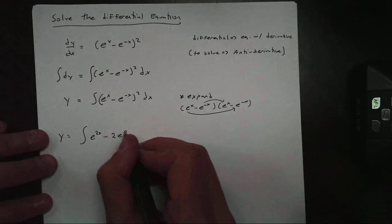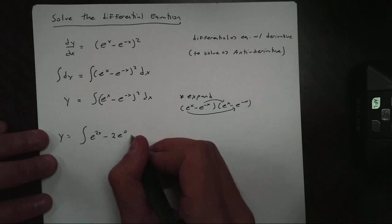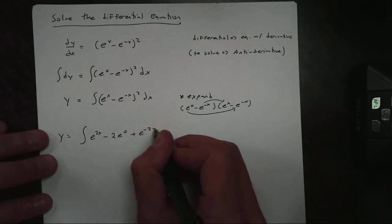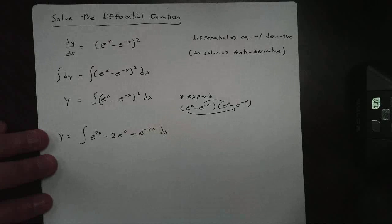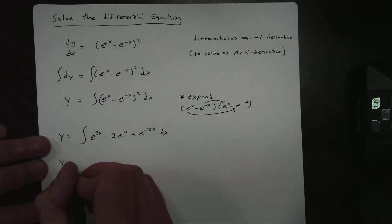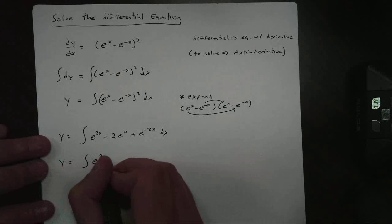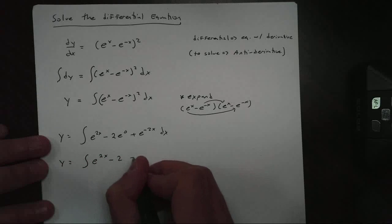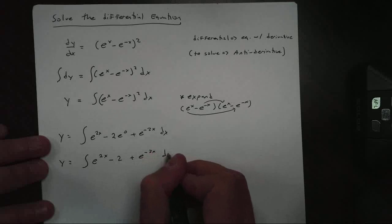So I get two e to the 0s. And if I do the last, plus e to the negative 2x dx. And I can simplify this just a little bit more: e to the 2x minus 2 plus e to the negative 2x dx.